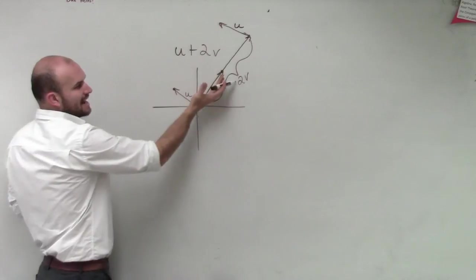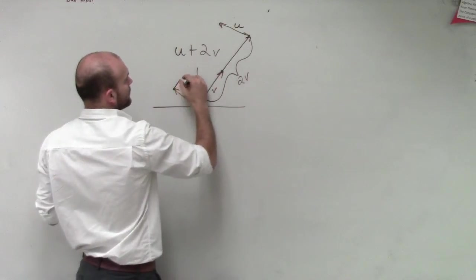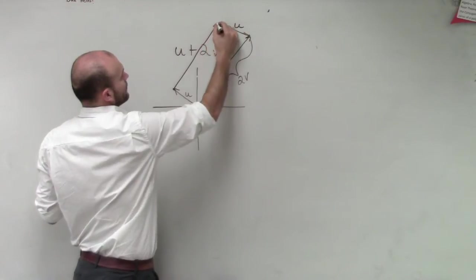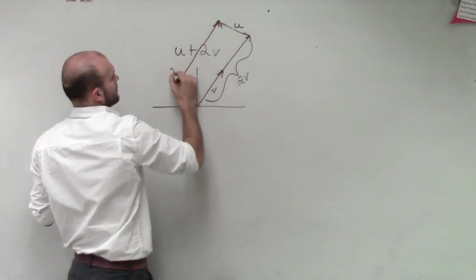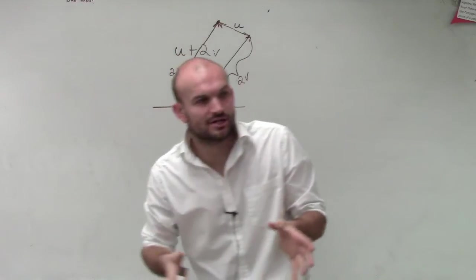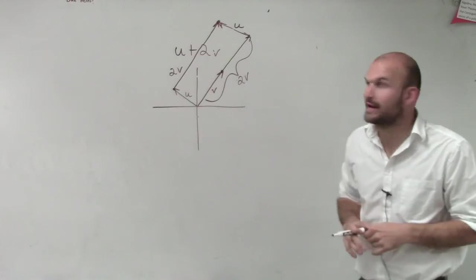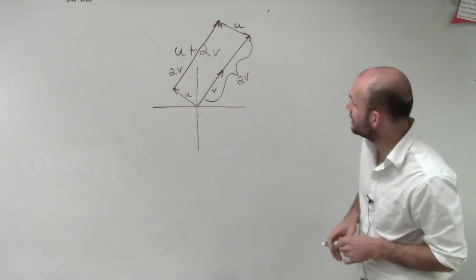Or you could take v and add it, or 2v, and add it to the end of u. So you guys see what I did? I just took one vector, and I added it to the end of the other vector. And what that did is that created a parallelogram, somewhat of a parallelogram.